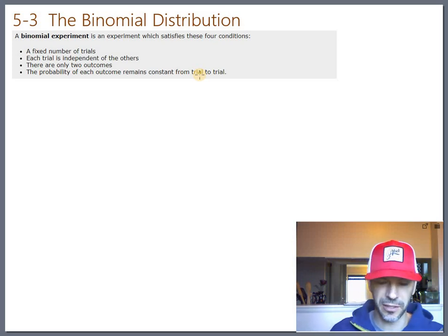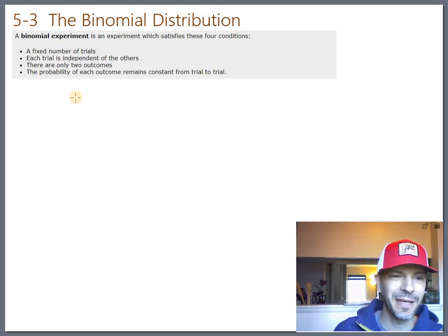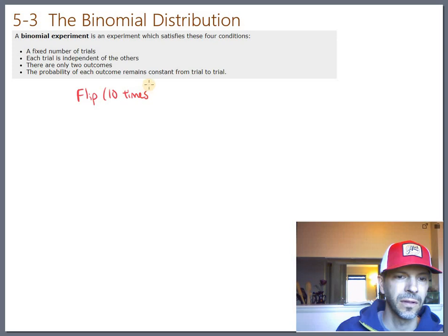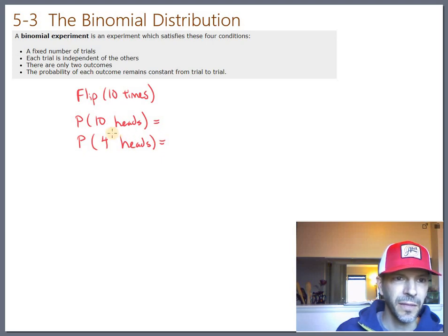And let's just, let's not do 92, but let's maybe say, let's flip a coin 10 times. So let's flip a coin 10 times. And let's talk about the probability of just getting 10 heads in a row. And maybe we'll also do what's the probability that you get 4 heads out of those 10 trials.